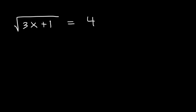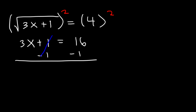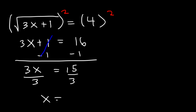If you know what to do, feel free to pause the video and work on this example. The first thing we need to do is get rid of the square root, and the only way to do that is to square both sides. So on the left side we now have 3x plus 1, and on the right side 4 squared — 4 times 4 is 16. Now let's subtract both sides by 1, so 3x equals 16 minus 1, which is 15. Then divide both sides by 3, so x is equal to 5.